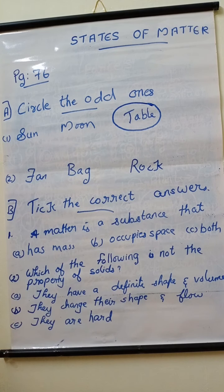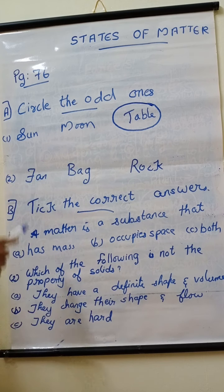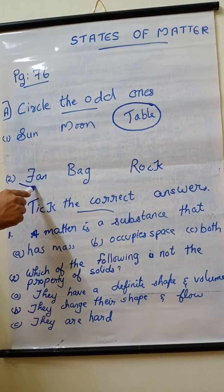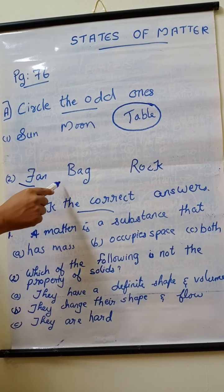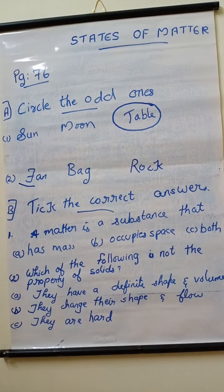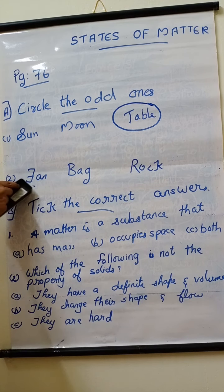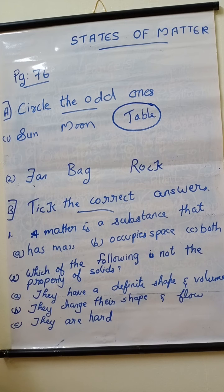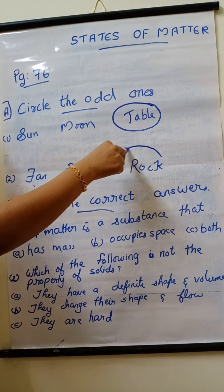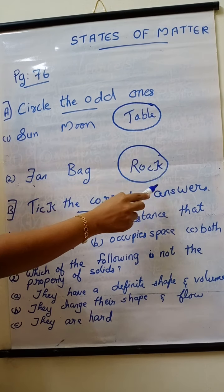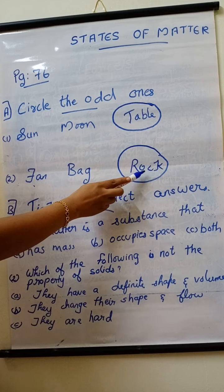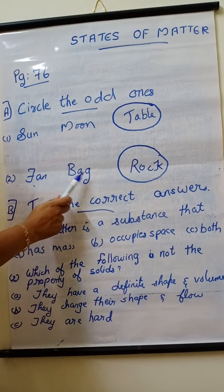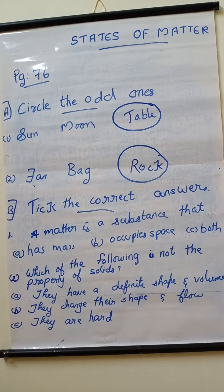Second one is fan, bag, rock. Fan is a human made thing. Bag is a human made thing. But rock is a natural thing. So here the odd one out is rock. Because it is a natural thing, while others are human made things.